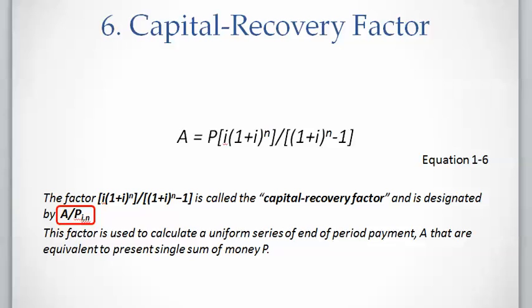If we write equation one-six according to the factor notation we will have factor A over P. The factor is called the capital recovery factor and is used to calculate a uniform series of end of period payments A that are equivalent to a present single sum of money P.